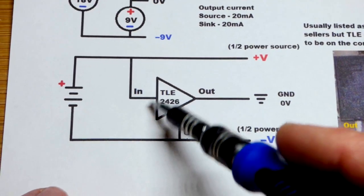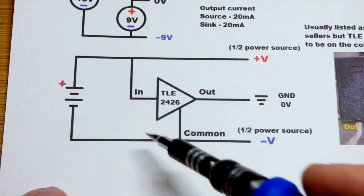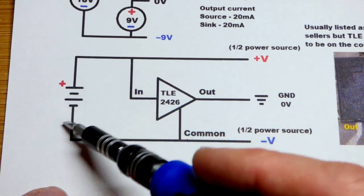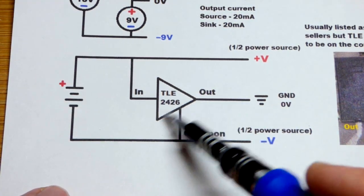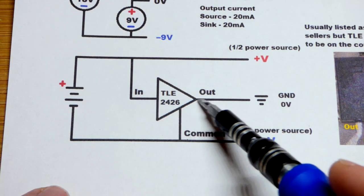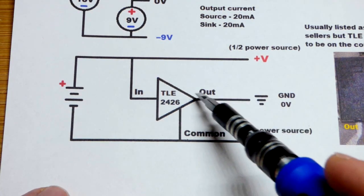With the integrated circuit, the TLE 2426, you don't have to do that. You can just take a single supply right there and power those two pins, and now we get a halfway point as the output.